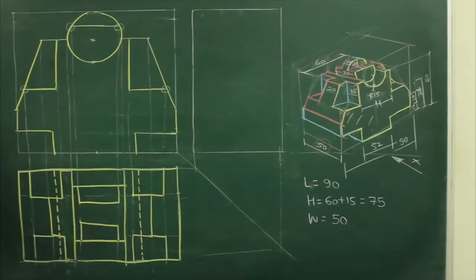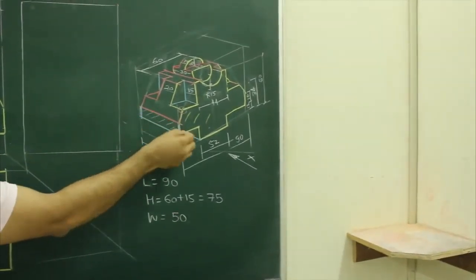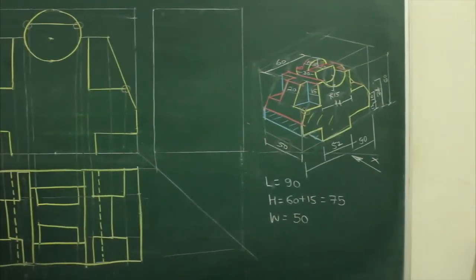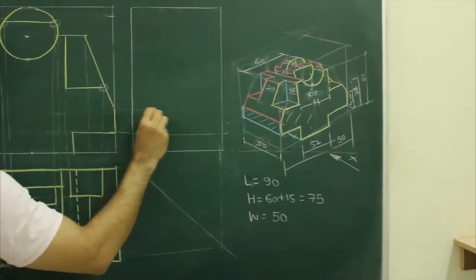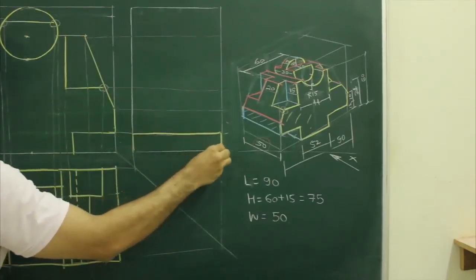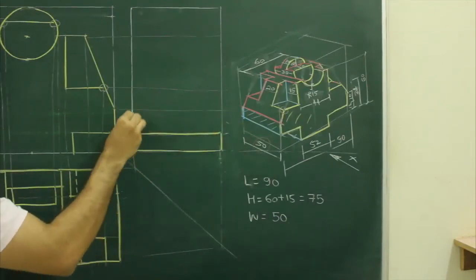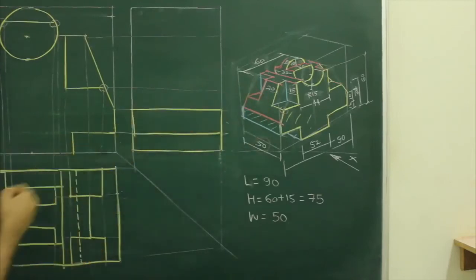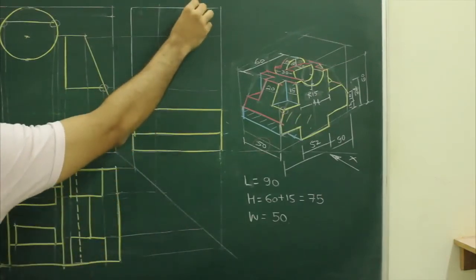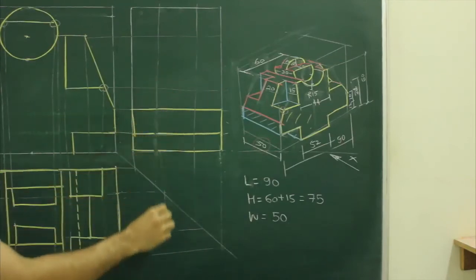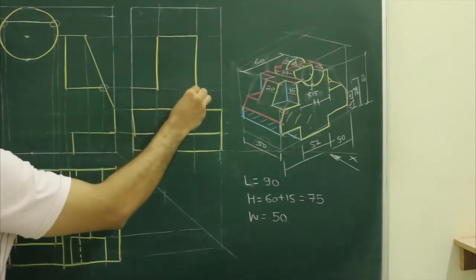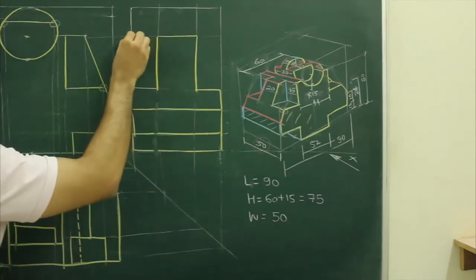Now we have to draw the side view. When you see from this side, you will see this rectangle, the lower rectangle, and this T shape plus these two rectangles. So we will project from front. This one is the lower rectangle, then we have a rectangle, then we have T shape, gap is 20. So we can project from top view and we will get this T shape. This would also be dark.